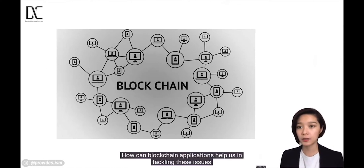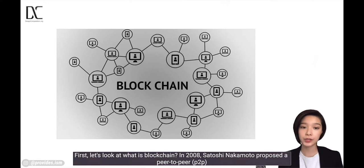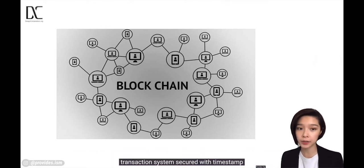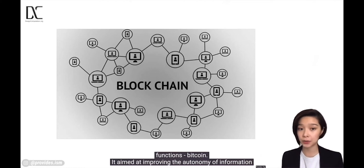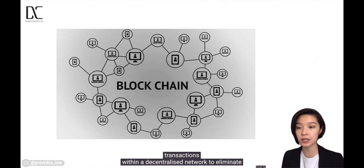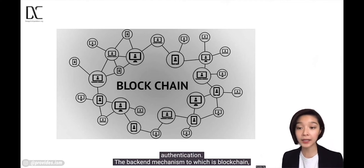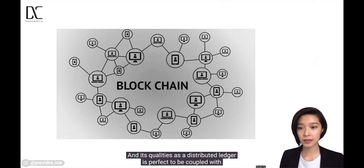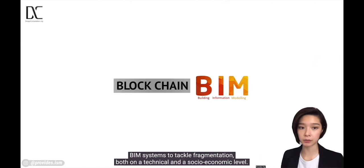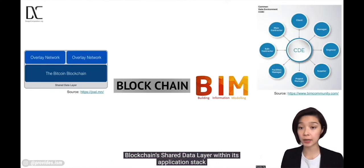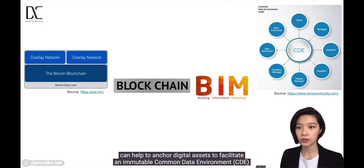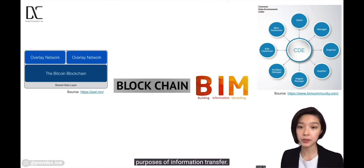The question is: how can blockchain applications help us in tackling these issues? In 2008, Satoshi Nakamoto proposed a peer-to-peer transaction system secured with timestamp functions — Bitcoin. It aimed at improving the autonomy of information transactions within a decentralized network to eliminate the time and resources needed for institutional authentication. The backend mechanism to which is blockchain, and its qualities as a distributed ledger are perfect to be coupled with BIM systems to tackle fragmentation, both on a technical and on a socioeconomic level. Blockchain's shared data layer can help to anchor digital assets to facilitate an immutable common data environment, a CDE for BIM.